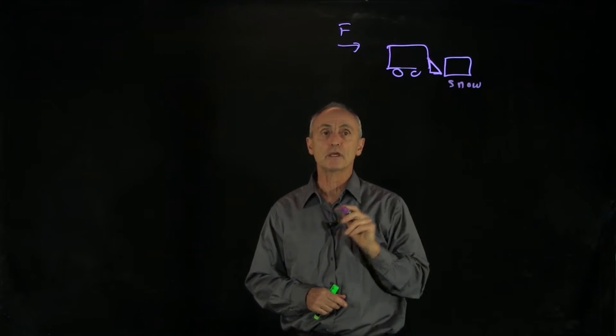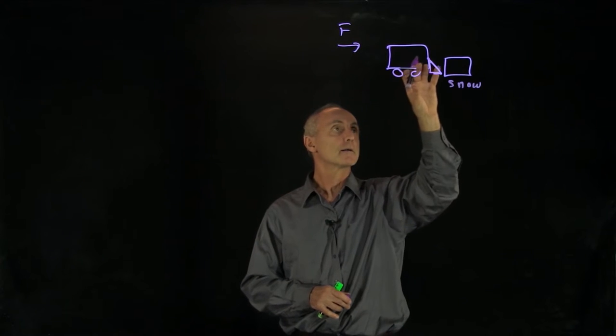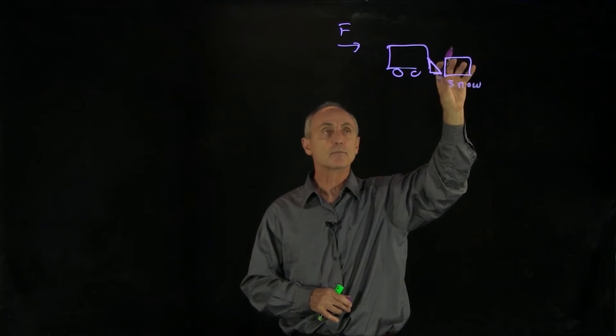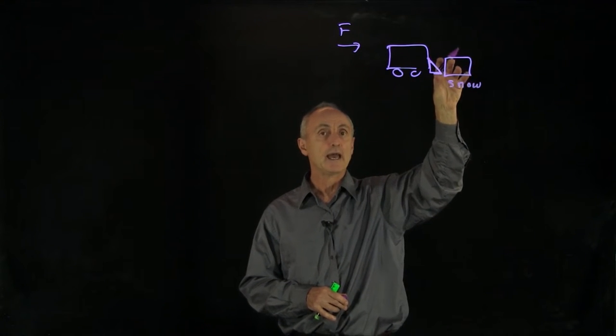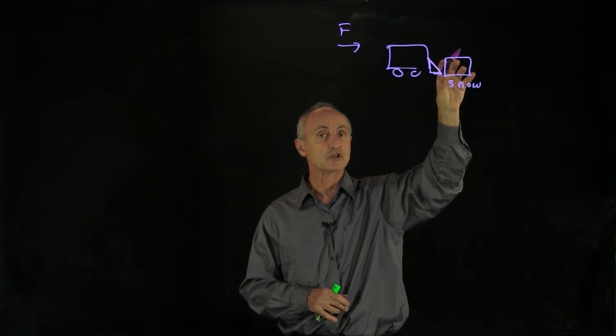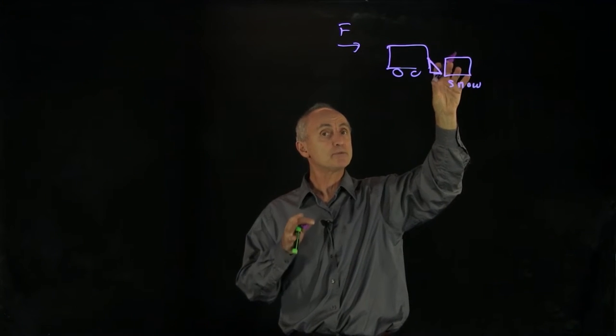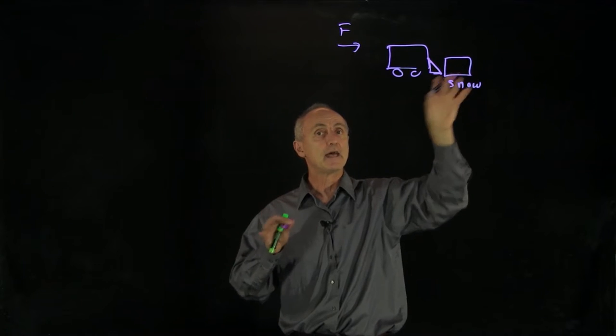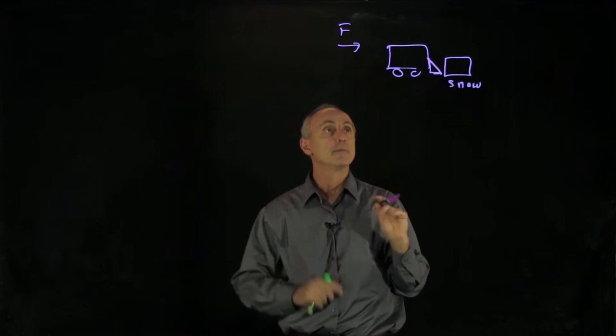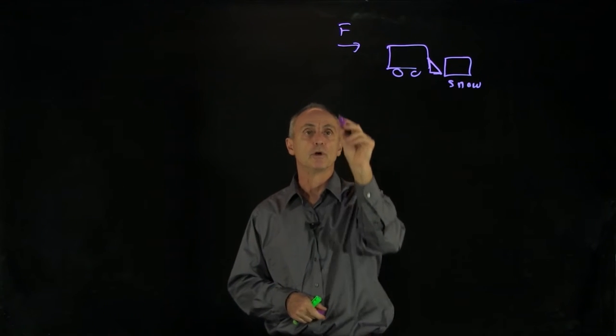And this is our snow. And what's happening in this problem is that the truck picks up the snow, which is at rest initially, gets the snow up to the speed of the truck. And then the snow falls off the plow. So how do we model this problem?